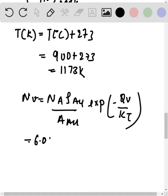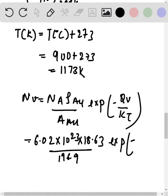It is equal to 6.02 times 10 to the power 23 into 18.63 divided by 196.9 exponential raised to minus 0.98 divided by 8.62 into 10 to the power minus 5 into 1173.